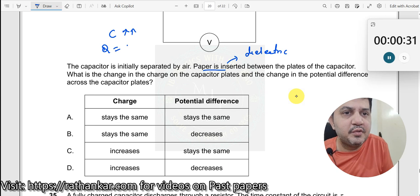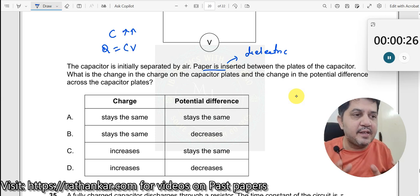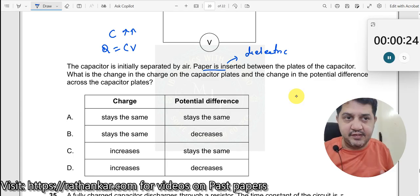Because we know Q is equal to C times V. When C increased, Q should also increase. What do you mean by that? The capacity to hold the charges will increase.